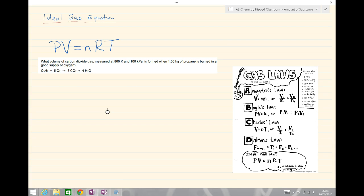Let's have a look at this question. What volume of carbon dioxide gas measured at 800 Kelvin and 100 kilopascals is formed when one kilogram of propanone is burned in a good supply of oxygen? The value for R is equal to 8.31 joules per mole per Kelvin. We've got a value for the temperature in Kelvin, so we don't need to do a conversion. We've got pressure and we'll need to convert from kilopascals to Pascals. We haven't got a value for the moles but we do have a mass and we can calculate the MR to work out the number of moles. We have to rearrange our equation.